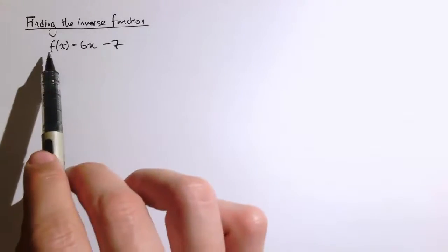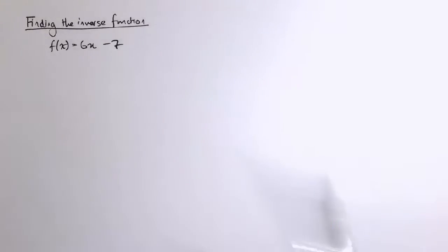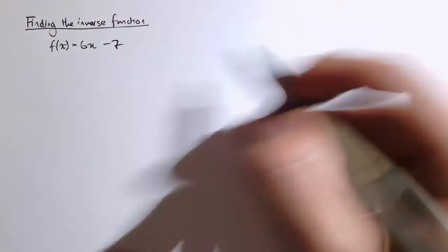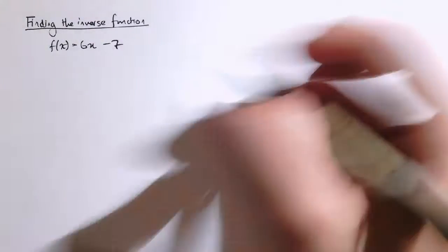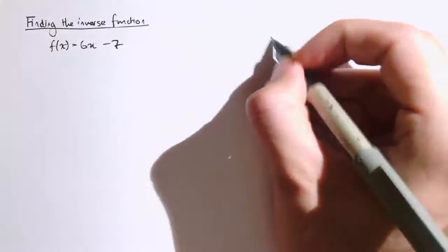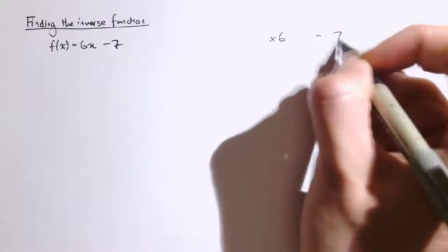So here's a function f(x) equals 6x minus 7. The easiest way to work out the inverse here is to think about what's happening: multiplying by 6 and then subtracting 7, so times 6 and minus 7.